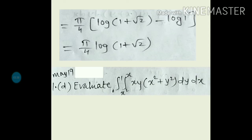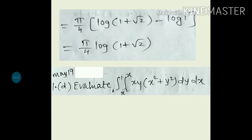See the next question: evaluate the double integration from 0 to 1 and x² to x of the function x·y·(x² + y²) dy dx. This type of question generally appears in question number 1 of the exam. Again, identify the order of integration. The inner limits involve x, so these are the limits of y — y is a function of x — and the outer limits 0 to 1 are limits of x. So we integrate with respect to y first.